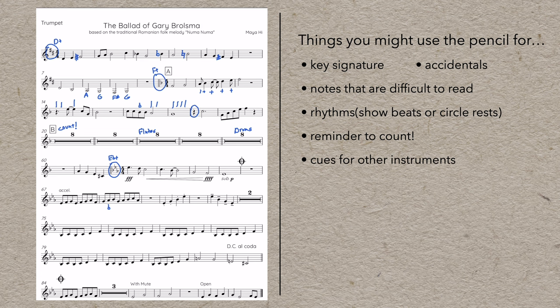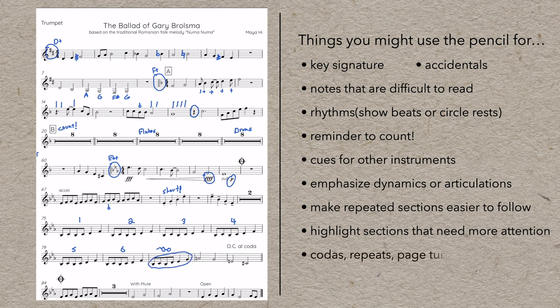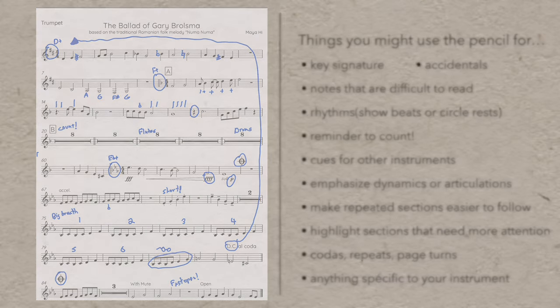You can also use the pencil to help remind you about all kinds of other markings and make them more obvious, like dynamics or articulations. If you have a repeated section, it can get really confusing, so I'll often write numbers above the bars to make it easier to follow. I'll just memorize one bar and then play it however many times are indicated. And I don't know if this is a thing that's just local to Toronto, but I know lots of people like to draw little eyeglasses on sections that are tricky or surprising or just need a bit of extra attention. And if there are jumps around the page for codas and signs, you might want to add markings so that you don't get lost. Not to mention quick page turns. And there are probably a million other things that might be specific to your instrument. I definitely have my own as a trumpet player. Your teacher will probably have some suggestions about this, and you'll surely figure some for yourself out along the way.